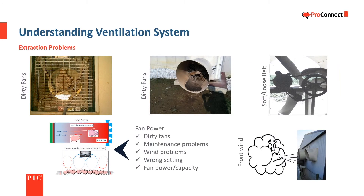The ventilation system depends on fans to move air out so fresh air can enter. Extraction problems can be caused by a variety of things such as wrong controller settings, dirty fans and louvers, wind interference, maintenance problems, as well as fan power or capacity. Air speed that is too low results in incorrect air mixing and poor ventilation, both with ceiling inlets and in tunnel ventilation.